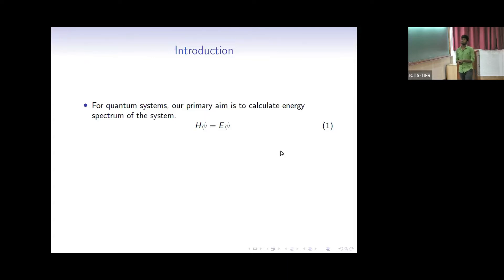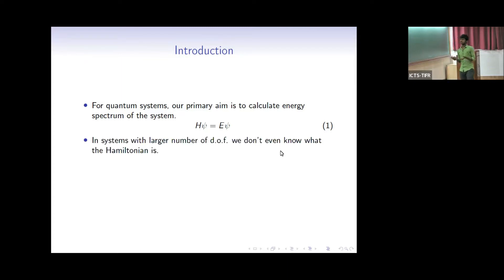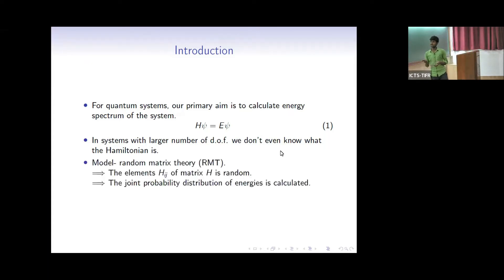For quantum systems, our primary aim is to calculate the energy spectrum of the system corresponding to the Hamiltonian. That is, we have to solve H psi equal to E psi. And except for a few simple systems, we can't even solve this equation. And in systems with a large number of degrees of freedom, we don't even know what the Hamiltonian is. So here comes random matrix theory.